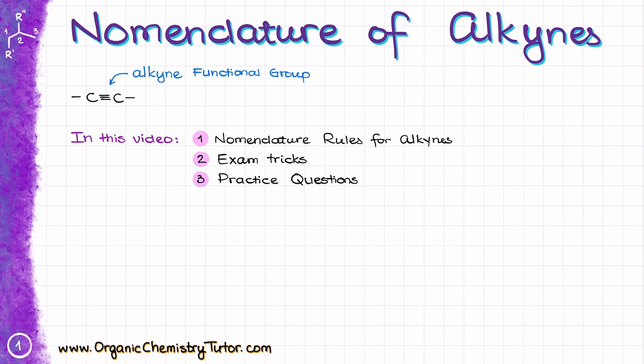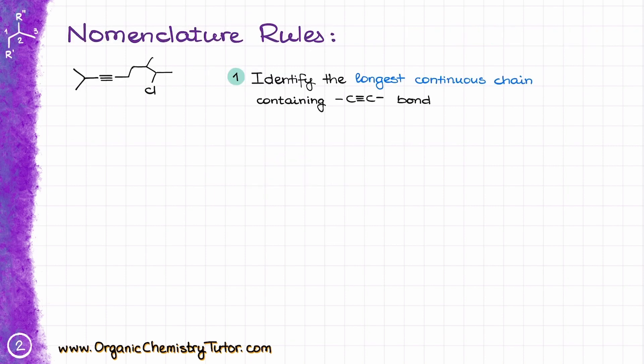So grab your cup of coffee, a notebook to work through the examples with me, hit that like button for good luck on the test, and let's get started! As a functional group, alkynes have an ending INE with a Y, so Y and E. So whenever we are going to be naming our alkynes, the name will end with the INE.